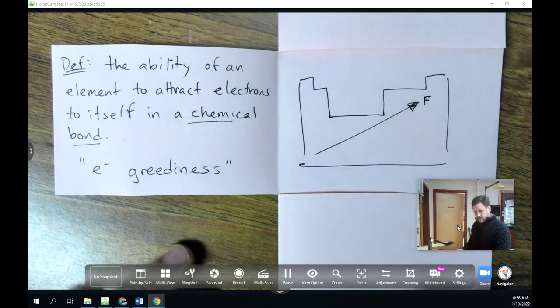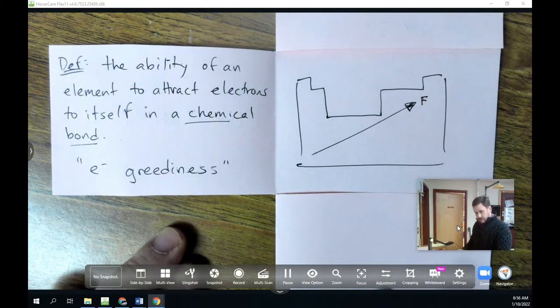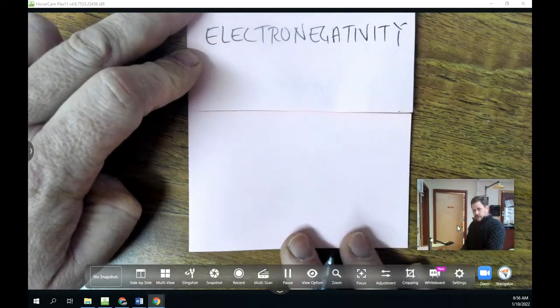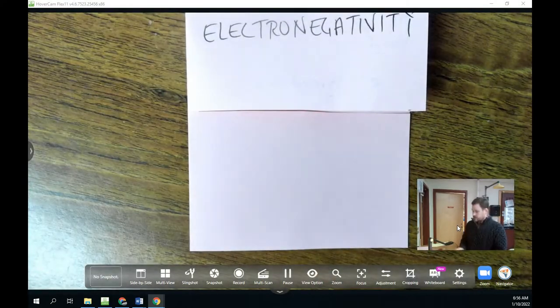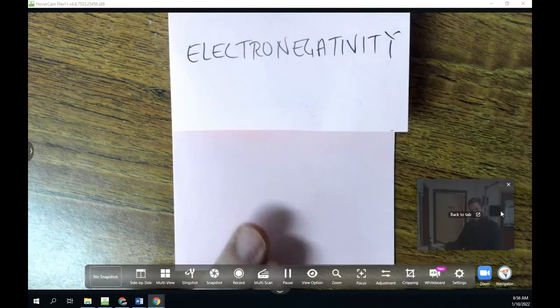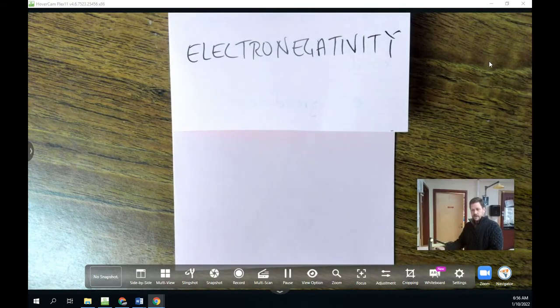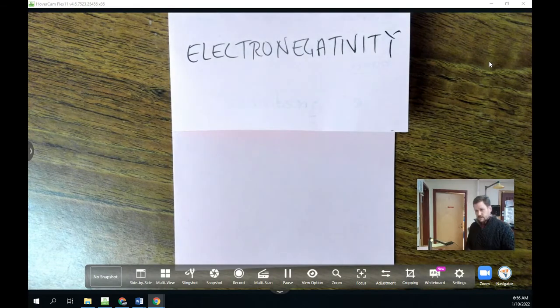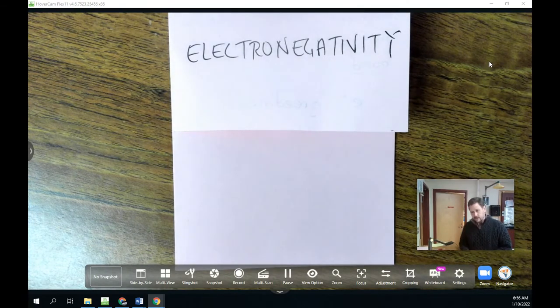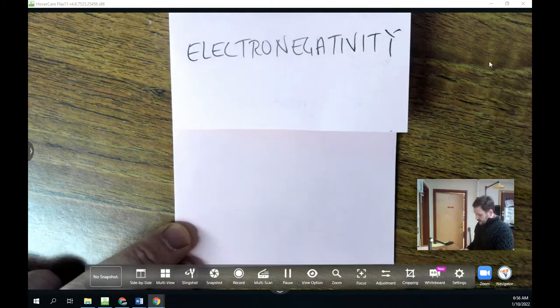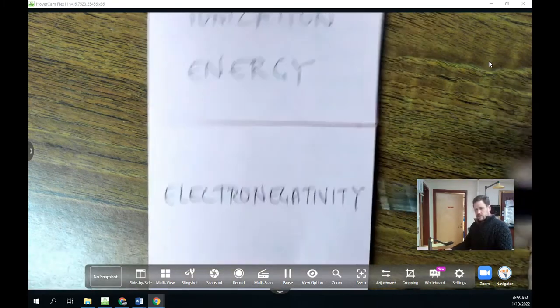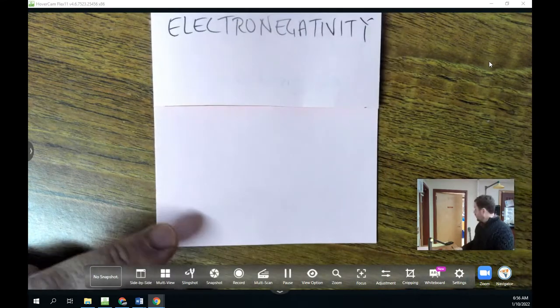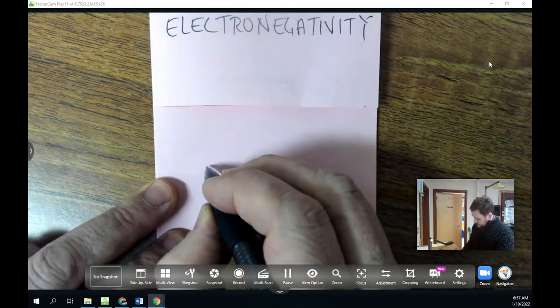Electronegativity, like I said, is an important idea for a lot of other concepts in second semester. It shouldn't be confused with something called electron affinity, which is a slightly different concept. And I've decided to not examine electron affinity this year just to, or in MRChem, just to keep things simpler and not introduce confusion for these two ideas, but instead to just look at one other periodic trend, which is density.